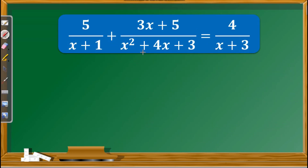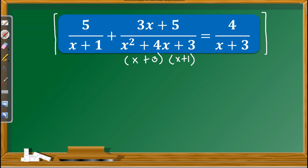Third example, we have 5 over x plus 1 plus 3x plus 5 over x squared plus 4x plus 3 equals 4 over x plus 3. Looking at the denominators, one of them is factorable. So before we find the LCD, we need to factor x squared plus 4x plus 3. The factors are x plus 3 and x plus 1. We also have x plus 1 in the first term and x plus 3 in the last term. Therefore, to eliminate the denominators, we multiply both sides by x plus 1 and x plus 3.